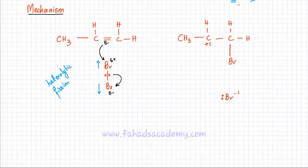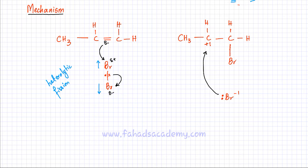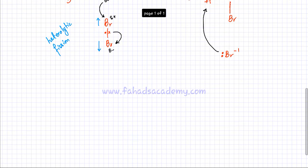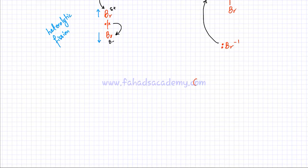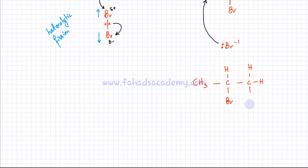In the final step of the mechanism, the carbon with the plus one charge is attracted to the negative bromine ion, which carries the extra electrons. That Br⁻ gets attracted to the positive carbon and bonds with it. The result is a molecule — CH₃–CHBr–CH₂Br — where one bromine is attached to each of the two carbons that formed the original double bond.